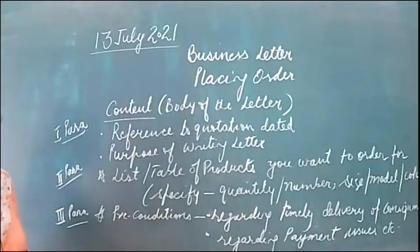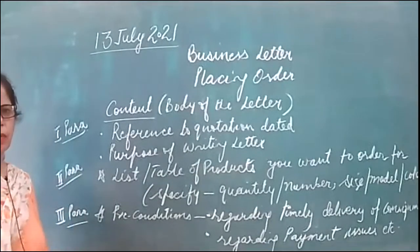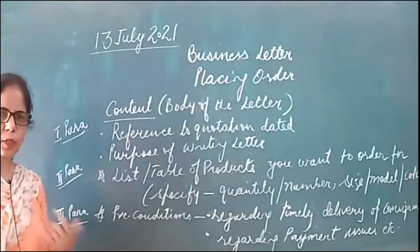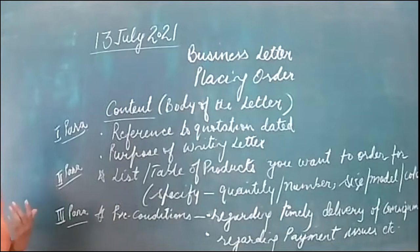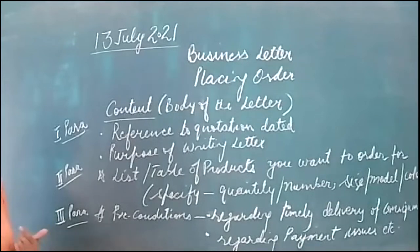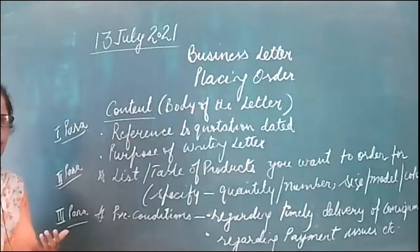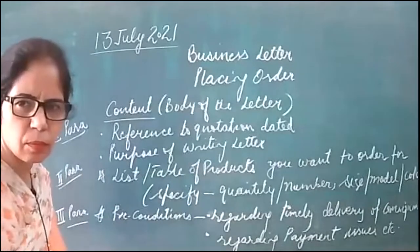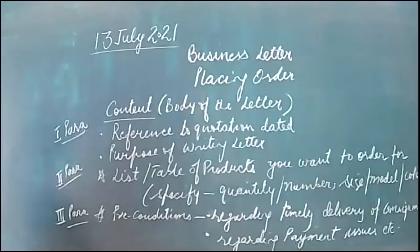On the top comes the sender's address - your address, the one who writes the letter. After sender's address, we write the date. After the date, we write the address of the addressee - the person to whom you are sending the letter. When you write the address of the addressee, the designation comes first: the Manager, Managing Director, CEO. For example, writing to the principal of Swami Sandha's Public School, Jalandhar.